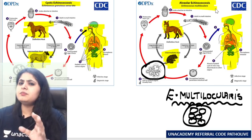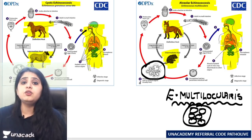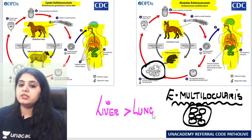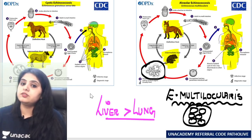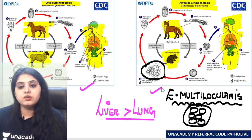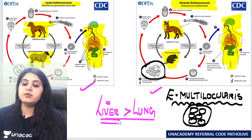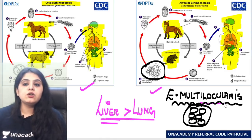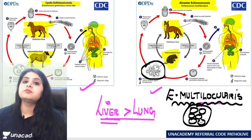The word 'alveolar' is given only because of the appearance of the cyst — not because the lung is more commonly involved. Liver still remains the most common site of involvement, whether it is Echinococcus granulosis or Echinococcus multilocularis. Liver involvement is always more common than lung.